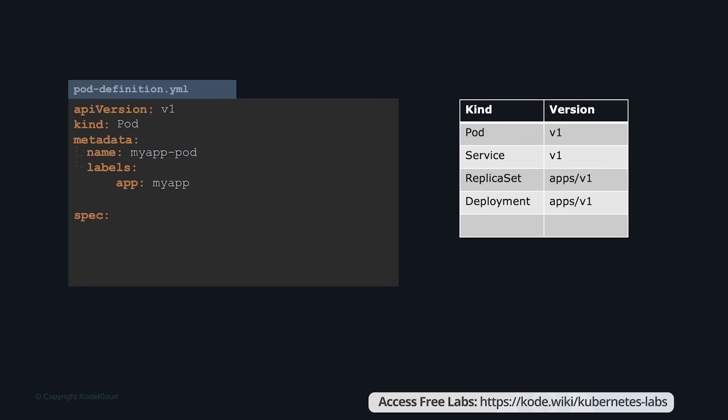So far we've only mentioned the type and name of the object — a pod with the name my-app-pod. But we haven't specified the container or image needed in the pod. The last section in the configuration file is the specification section, written as spec. Depending on the object we're creating, this is where we provide additional information to Kubernetes pertaining to that object. Since we are only creating a pod with a single container in it, spec is a dictionary. Add a property under it called containers, which is a list or array — the reason it's a list is that pods can have multiple containers within them.